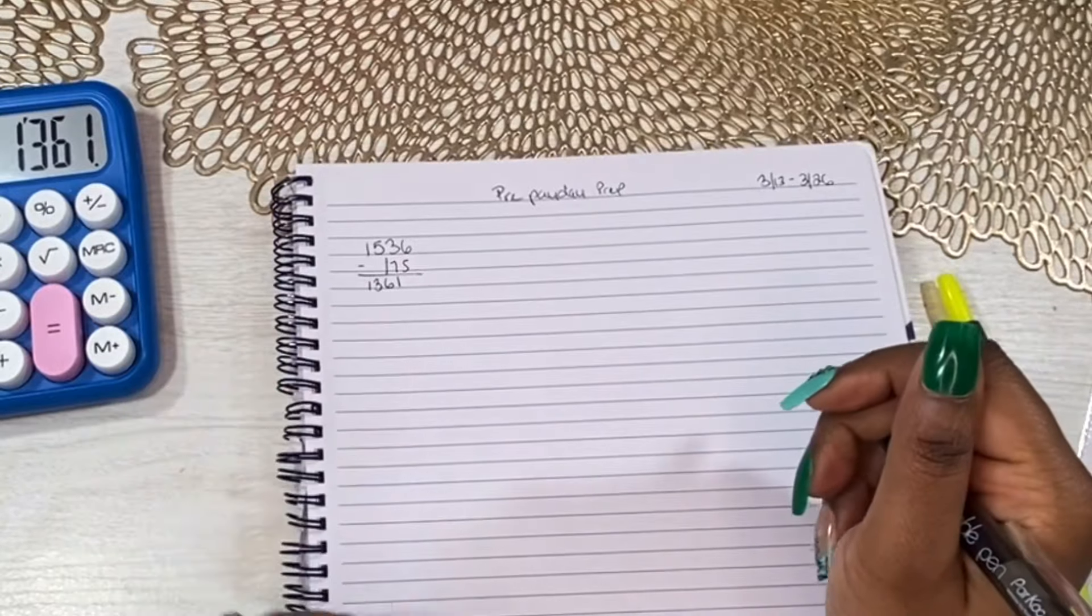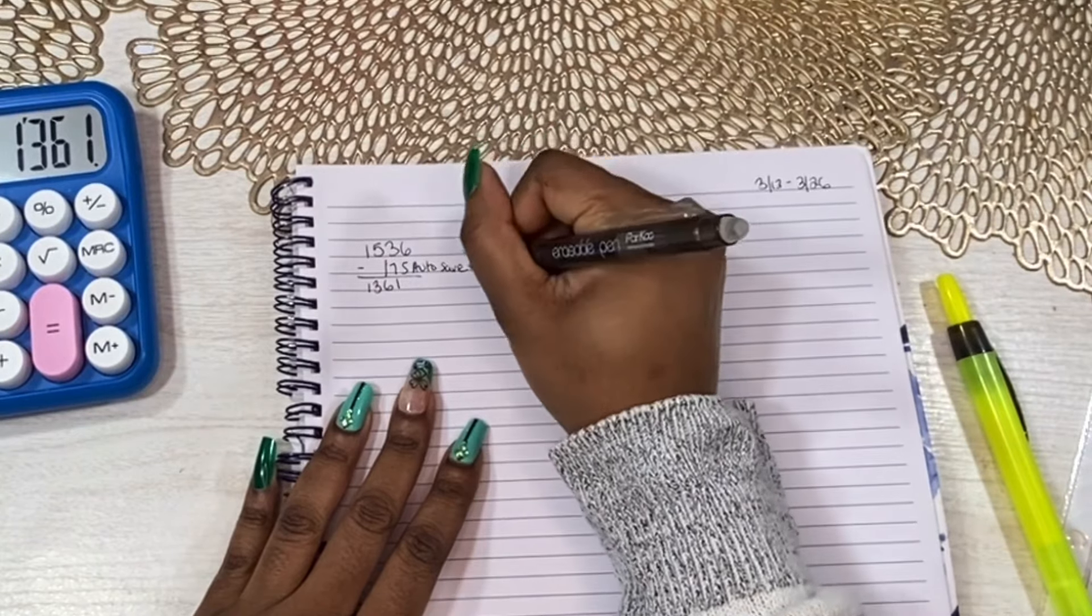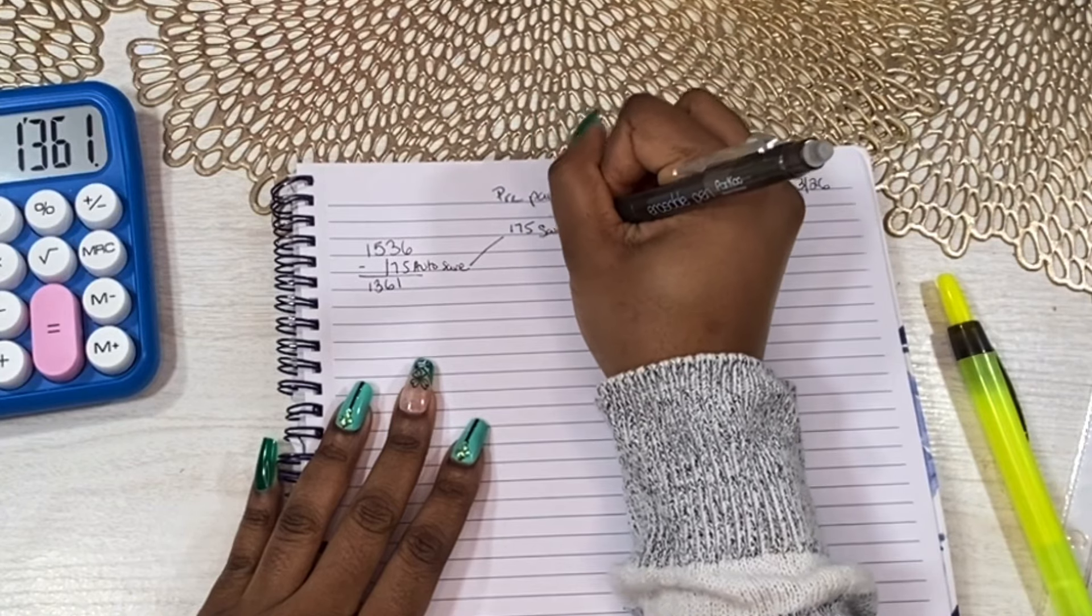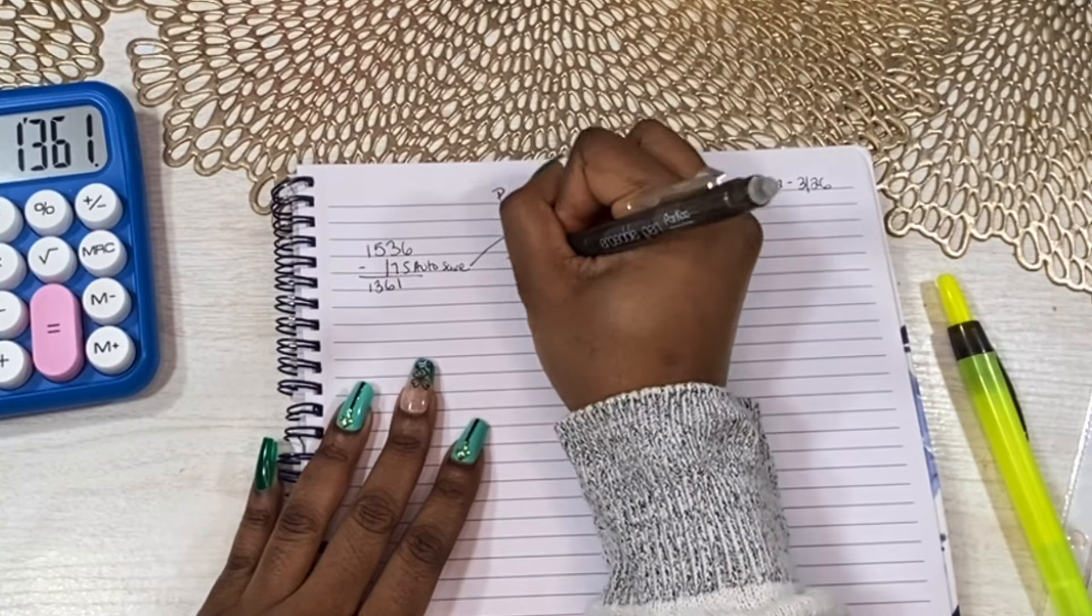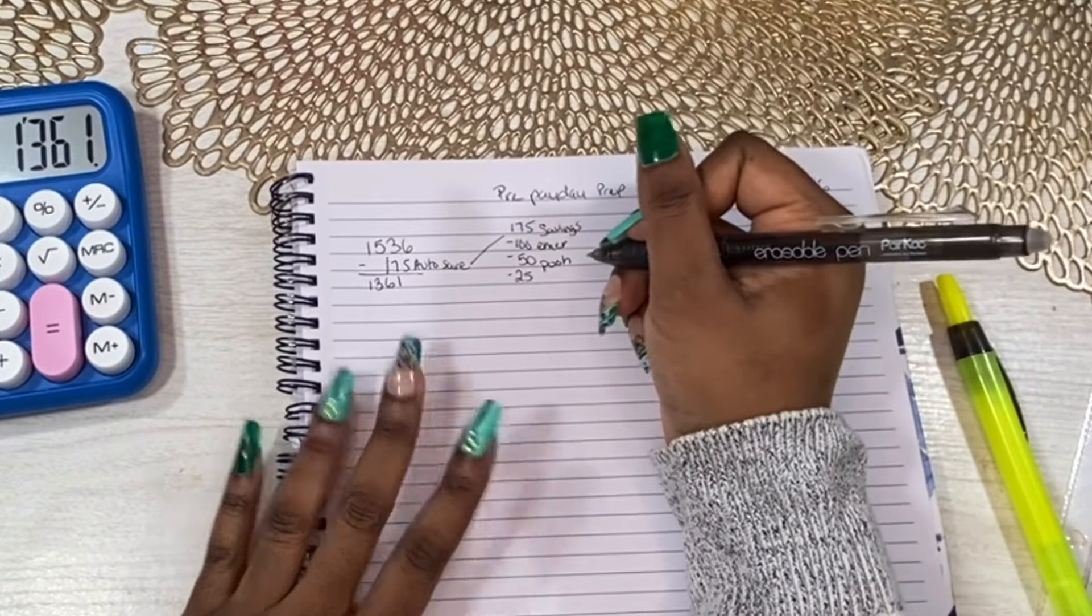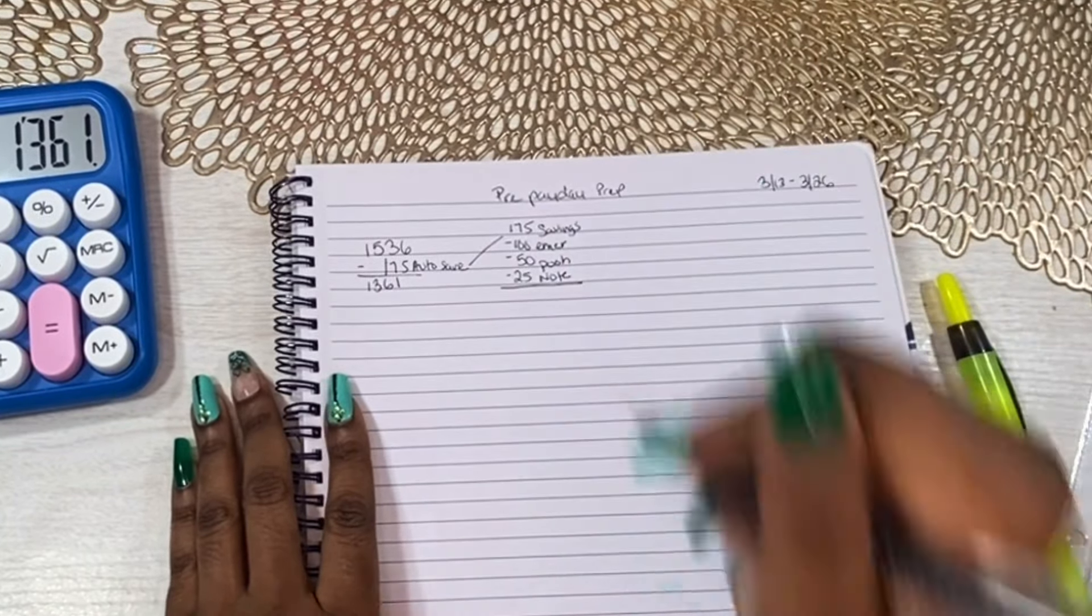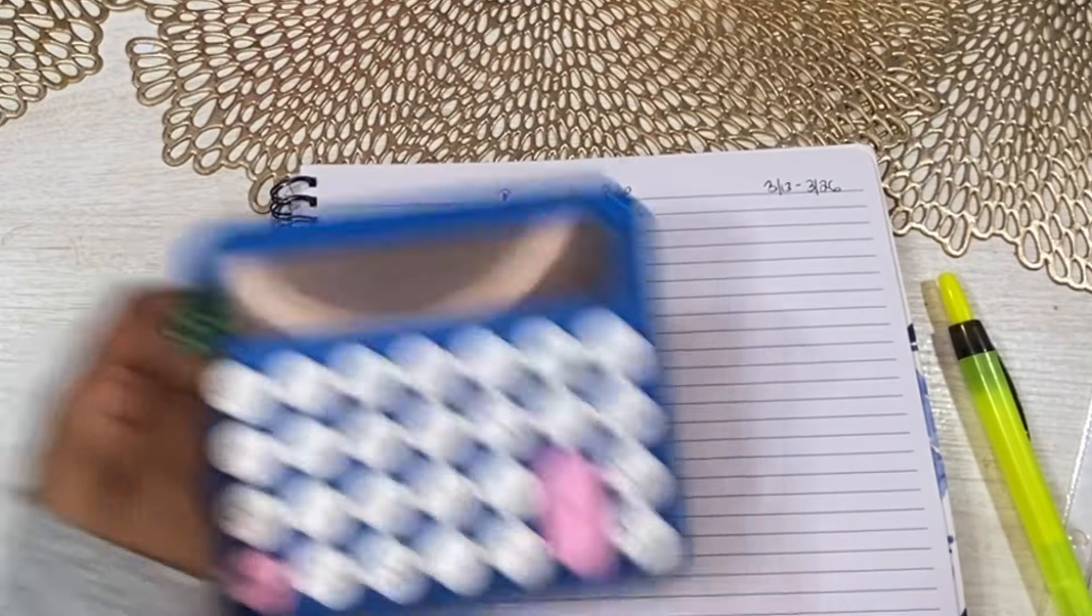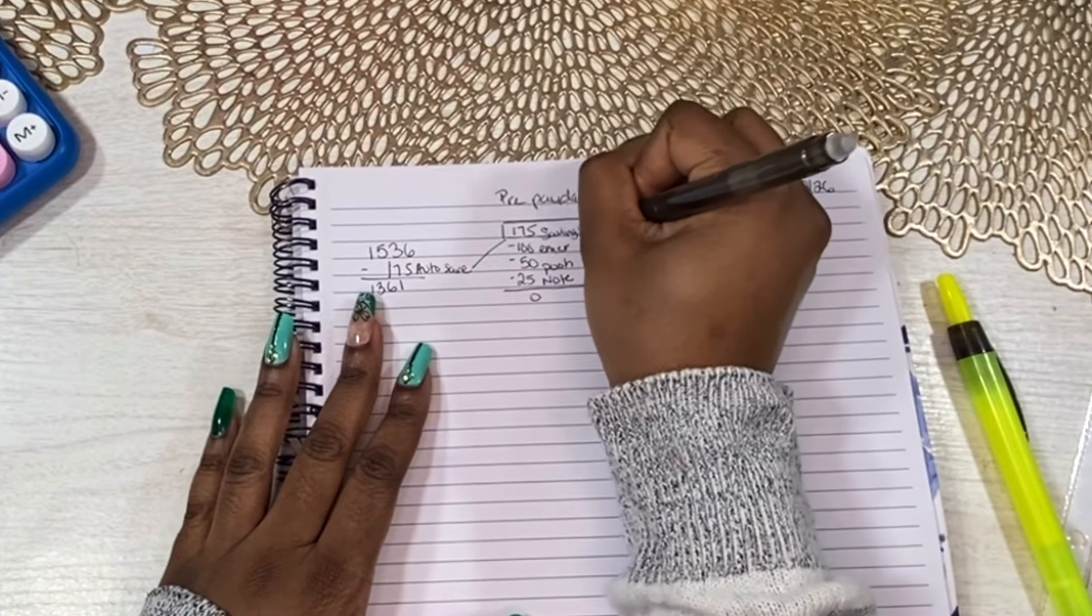So $1,536 was what we ended up with. So the first thing that we like to do is take out our automatic savings. And that's $175. So I am a big fan of paying yourself first. That is just how I roll. I make sure that my priority is me and my savings. So that's the first thing that comes out every paycheck, no matter what. So that $1,536 minus the $175 is $1,361. And that goes to three different savings accounts.